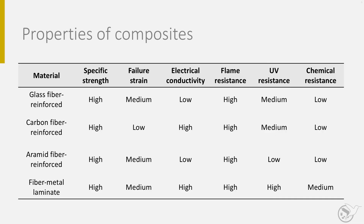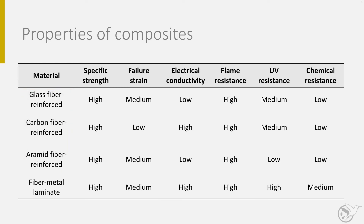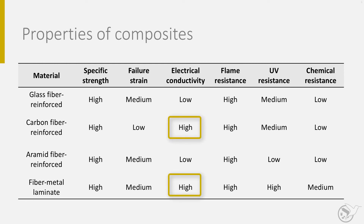To finish this session, I would like to briefly show some other properties of composite materials which are often used for structural applications. In this table you see the three main fiber types for structural aerospace applications: glass, carbon and aramid fibers. Also the hybrid material, fiber metal laminates, is mentioned. Noteworthy in this table are first the low failure strain of the carbon fibers, which is close to 1% — this might be a point of extra attention when designing and manufacturing with these fibers. Second, carbon fibers and fiber metal laminates are good electrical conductors. For fiber metal laminates, this is caused by the aluminum layers. These metal layers also play a positive role in the flame resistance, resistance to ultraviolet radiation and resistance to chemicals. Most of the properties in the table can be easily explained when the composition and structure of the composite is well understood.